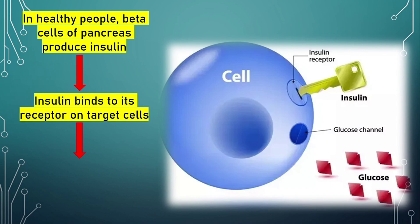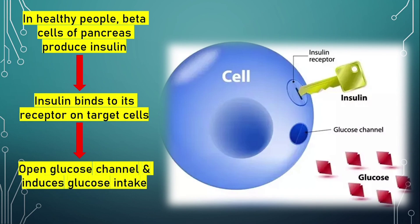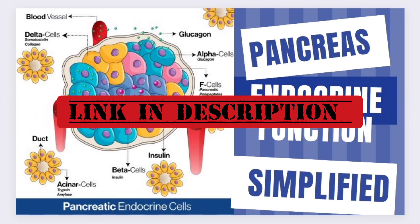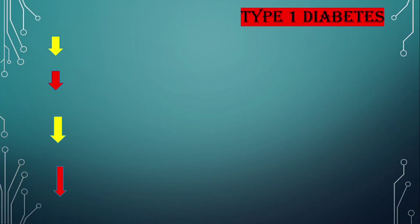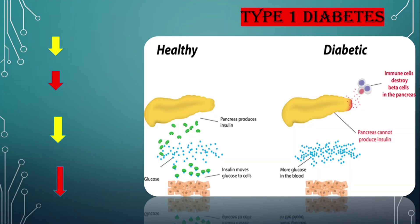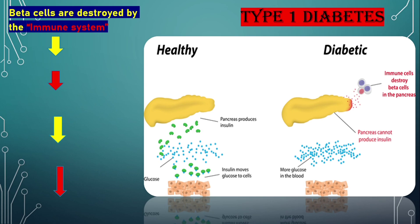Insulin binds to its receptor on target cells, opens glucose channels, and induces glucose intake. For more details on the pancreas and its hormones, please check out our other video — the link is in the description. In Type 1 diabetes, beta cells of the pancreas are destroyed by the immune system by mistake.